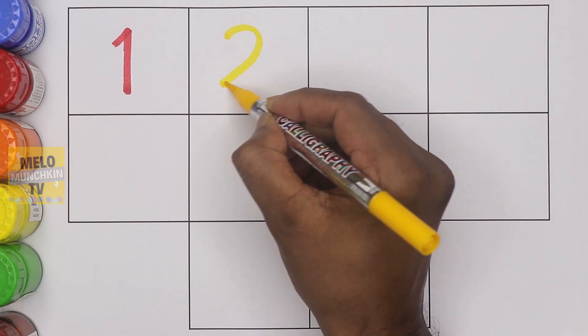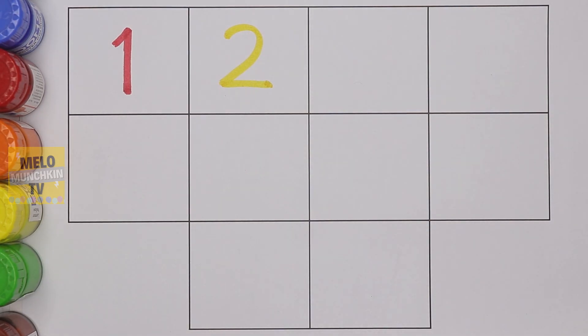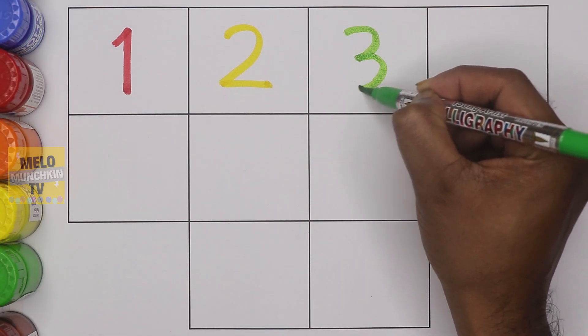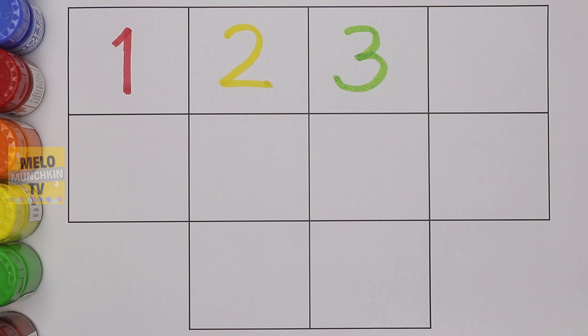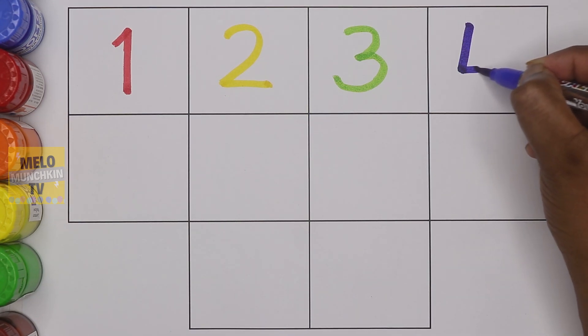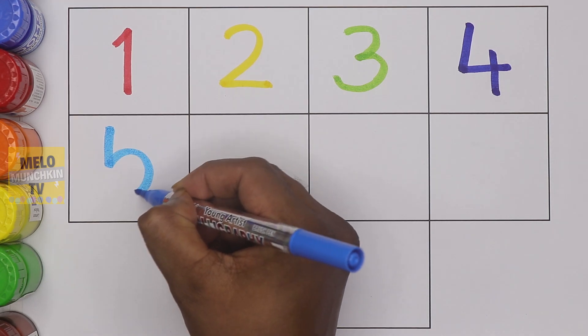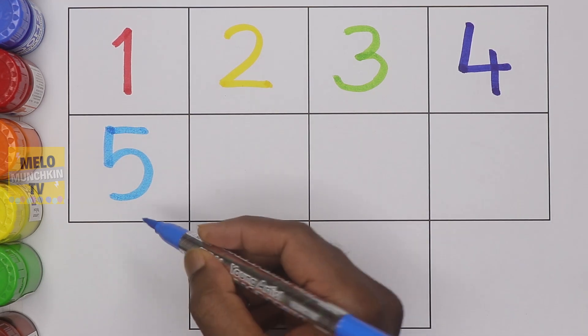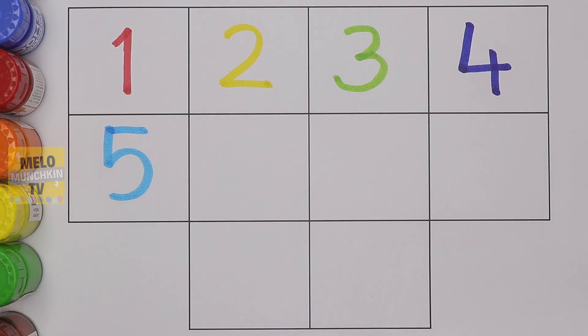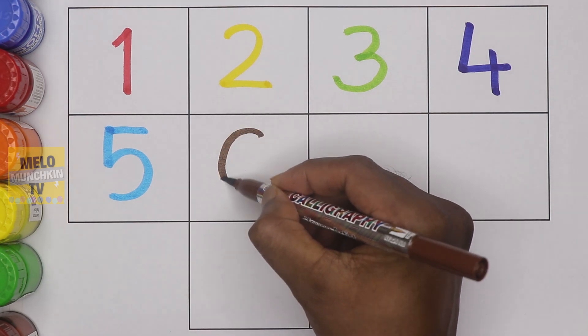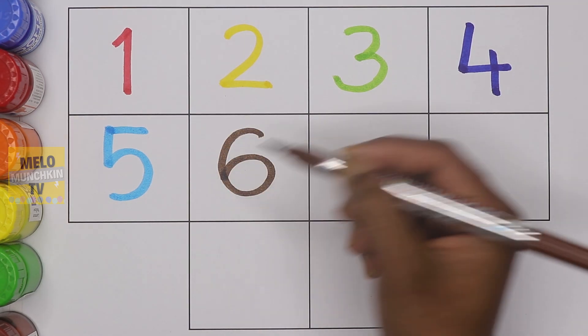This is number two. Number two. Green color, this is number three. Number three. Dark blue color, this is number four. Number four. Blue color, so after four this is number five. Five. Brown color, this is number six. Number six.